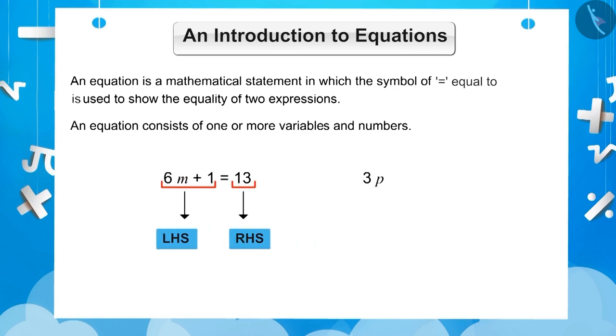Similarly, 3p plus 5 is equal to 8. This equation shows us that the sum of 3p and 5 is 8. The left side of the equation is 3p plus 5 and the right side is 8. The value of p that satisfies this equation will be called the solution of this equation.